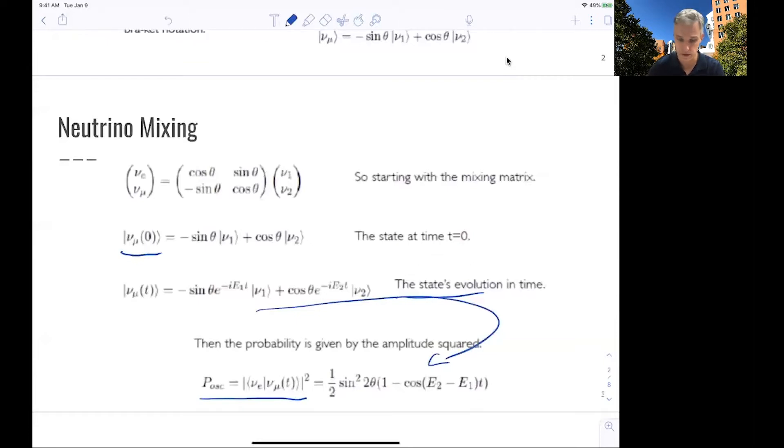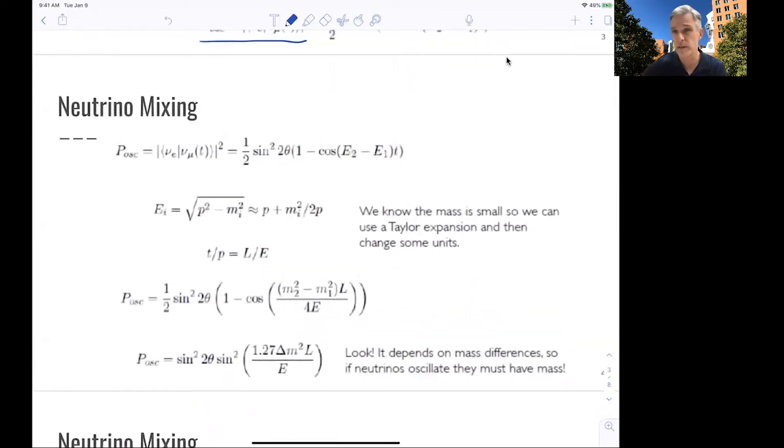Let's analyze this a little bit further. We know that the masses need to be small. So one thing we can also do here is a Taylor expansion of our energy and then just rewrite the term. If we then analyze this some more, we find that the oscillation probability simply depends on the mass difference squared, the length of distance the neutrino had time from t=0 to oscillate, and the energy of the neutrino.